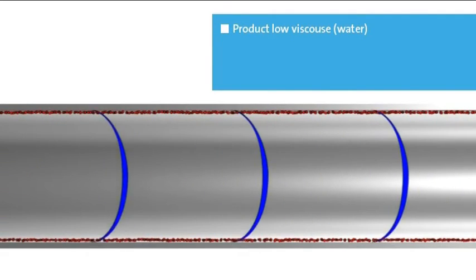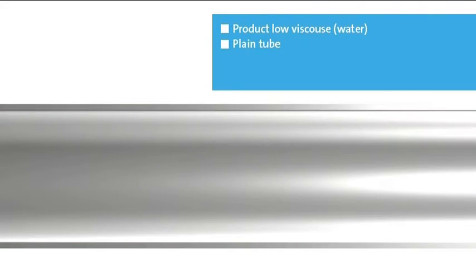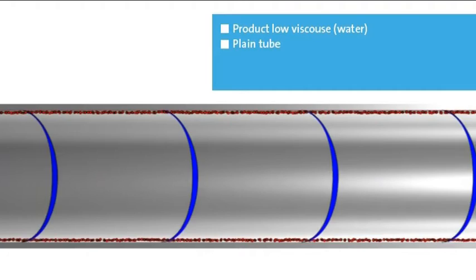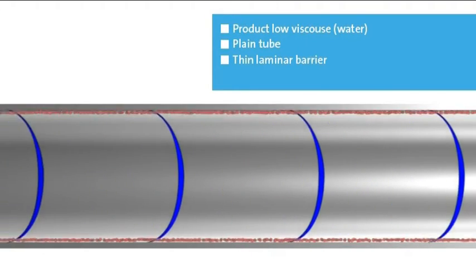Here is the flow for a product with low viscosity in a plain tube. The laminar barrier is thin while the heat transfer is very good.